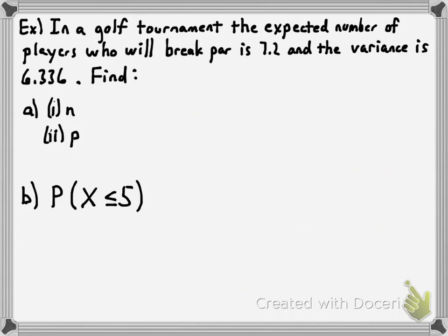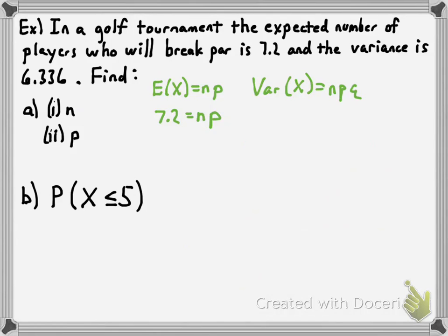Let's take the formulas for variance and expected value and use them here. The expected value of X equals n times p, which equals 7.2 in this case — but we know neither n nor p yet. We also know variance equals n times p times q, which is really the expected value times q. We'll replace the variance with 6.336 and replace n times p with the expected value 7.2, which lets us solve for q.